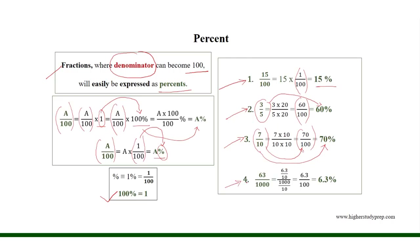And 63 over 1000 is equal to the equivalent fraction 6.3 over 100. Therefore, 63 over 1000 is equal to 6.3%.